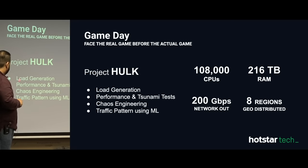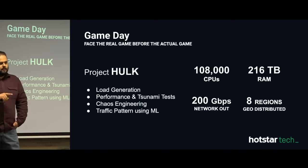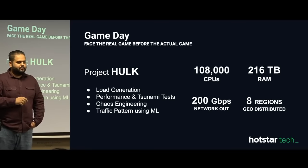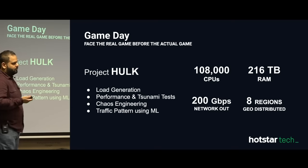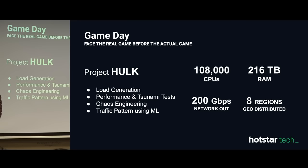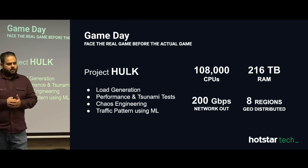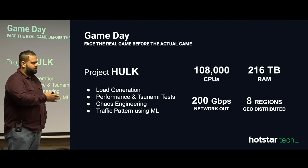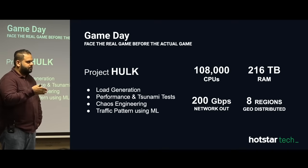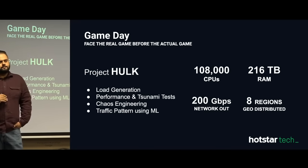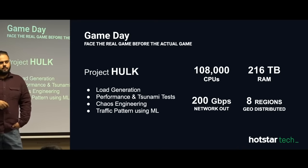Apart from load generation, this project helps us do performance and tsunami testing. Tsunami is that sudden surge and dip — it can kill any application unless you are prepared for it. It also helps us do chaos engineering. The project helps generate traffic patterns using ML. With all the information available, we know at what concurrency each application was handling — we go back to the drawing board and find the breaking point of each system. This helps us decide traffic patterns: what will happen if India bats first, or if two favorite teams are against each other.